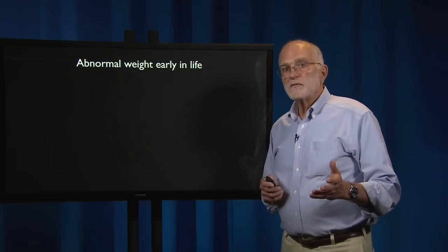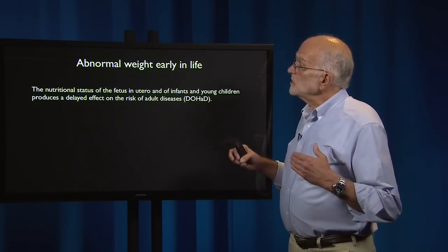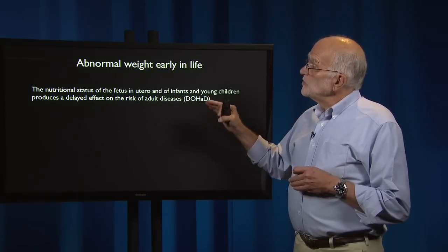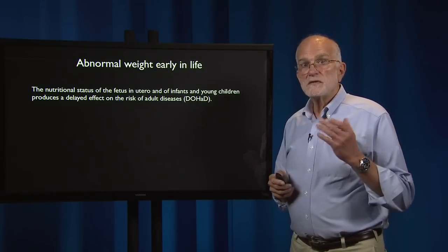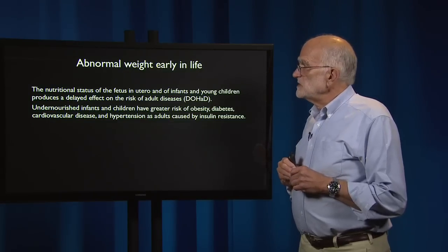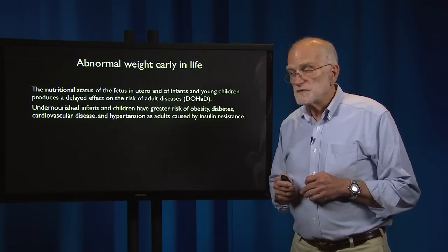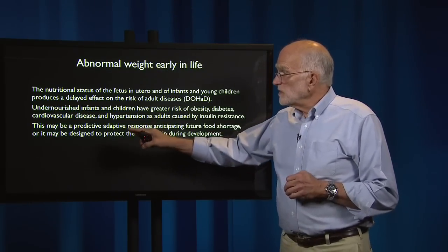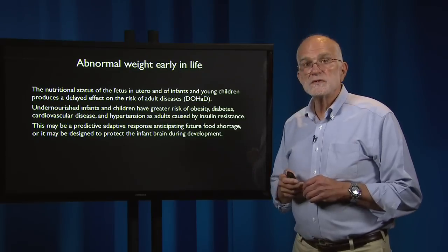Another effect is abnormal weight early in life. As we've seen with the Dutch Hunger Winter, the nutritional status of the fetus in utero and of infants and young children produces a delayed effect on the risk of adult disease. This is the DOHAD — developmental origins of health and disease — framework. Undernourished infants and children have a greater risk of obesity, diabetes, cardiovascular disease, and hypertension as adults, caused by insulin resistance. This might be a predictive adaptive response that anticipates future food shortage, or it might be designed to protect the infant brain during development — we can't be sure which explanation is correct.